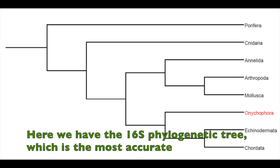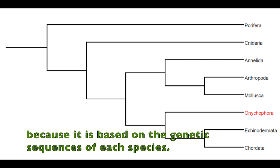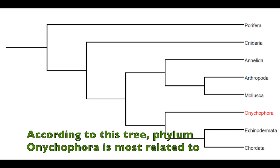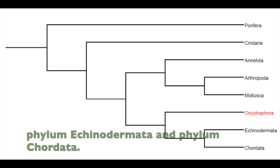Here we have the 16S phylogenetic tree, which is the most accurate because it is based on the genetic sequence of each species. According to this tree, phylum Onychophora is most related to phylum Echinodermata and phylum Chordata.